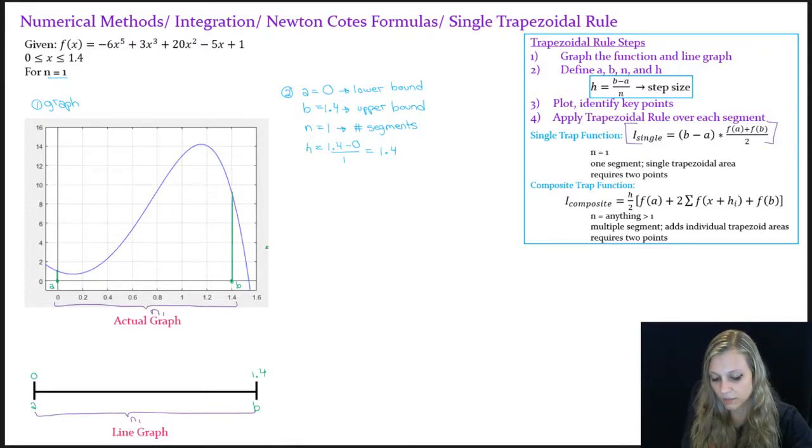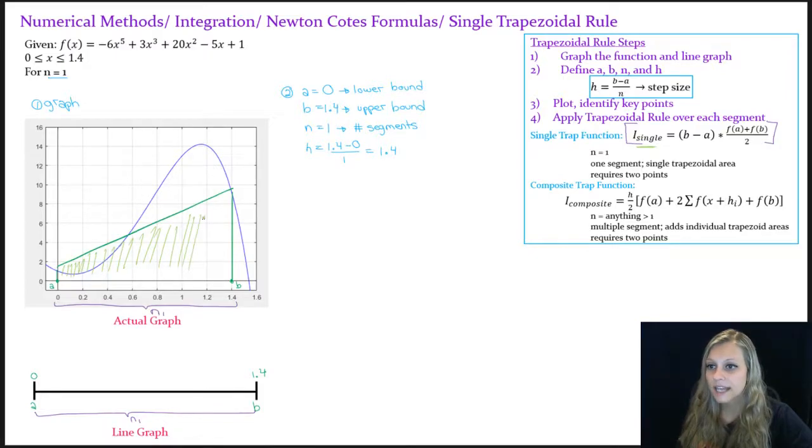And then the trapezoidal rule estimates the function as a straight line. So I'm going to draw a straight line connecting both of these points. That's close enough. So then when we use this integration formula, we are basically calculating the area under this trapezoid. And for this problem, we're saying that this is our estimate for the area under the blue curve.